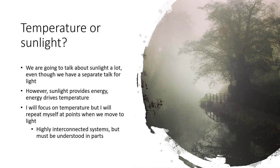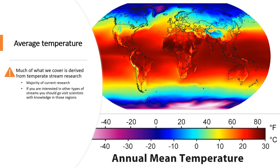I'll explain why sunlight changes across seasons and why that impacts temperature. We often think of temperature changing through seasons, which is helpful, especially since we're in a temperate zone and much of what we've learned about streams is derived from temperate stream research. Our research is heavily biased in favor of temperate streams because the vast majority of studies have been carried out in the United States and Europe.